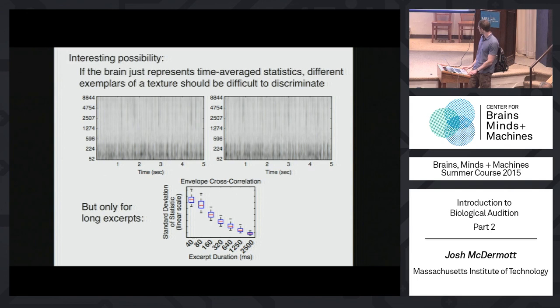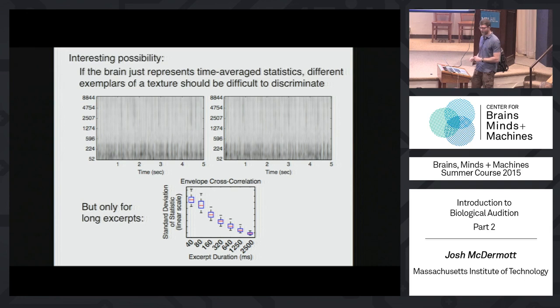We're going to take advantage of a really simple statistical phenomenon: statistics measured from small samples are more variable than statistics measured from large samples. We took multiple excerpts of a given texture of particular durations — 40, 80, 160, 320 milliseconds — and measured a particular statistic, specifically a cross-correlation coefficient for the envelopes of a pair of subbands. We looked at how variable that statistic is across excerpts, summarized with its standard deviation. When excerpts are short, statistics are variable; as excerpt duration increases, they converge to the true values of the underlying stationary process.